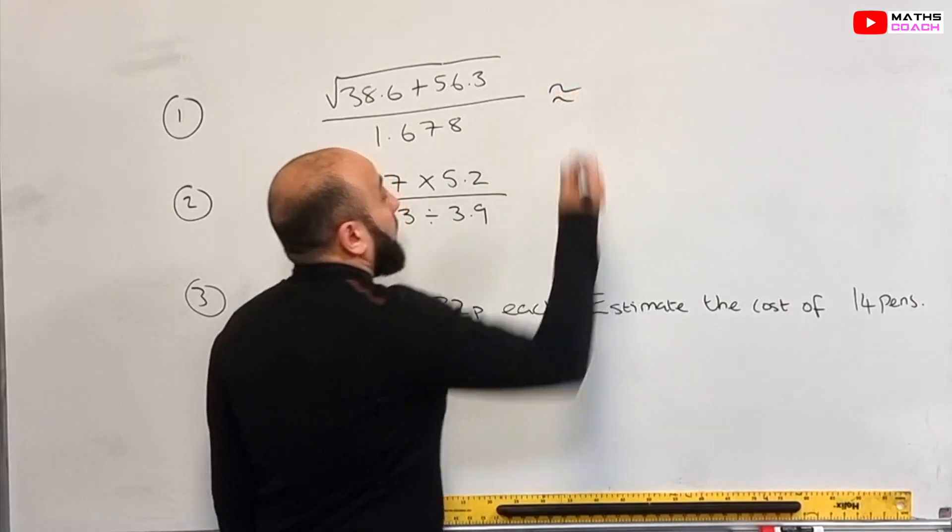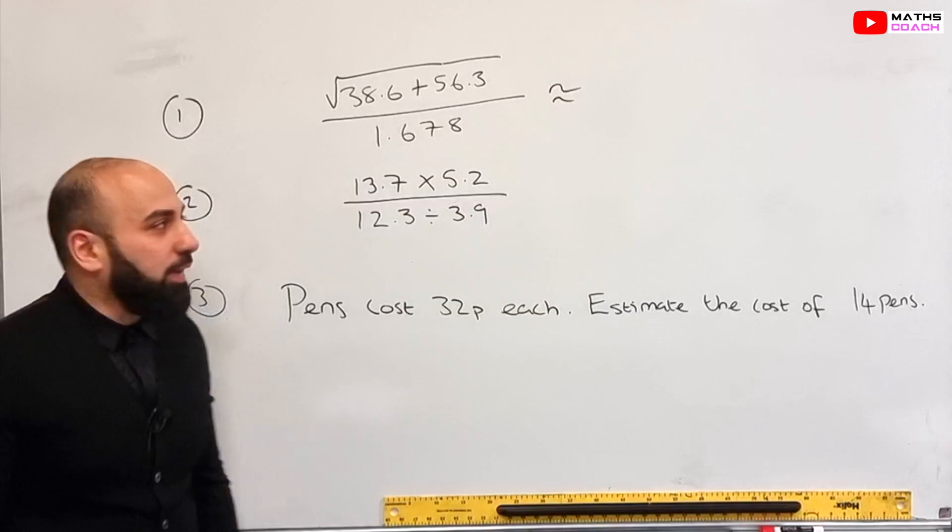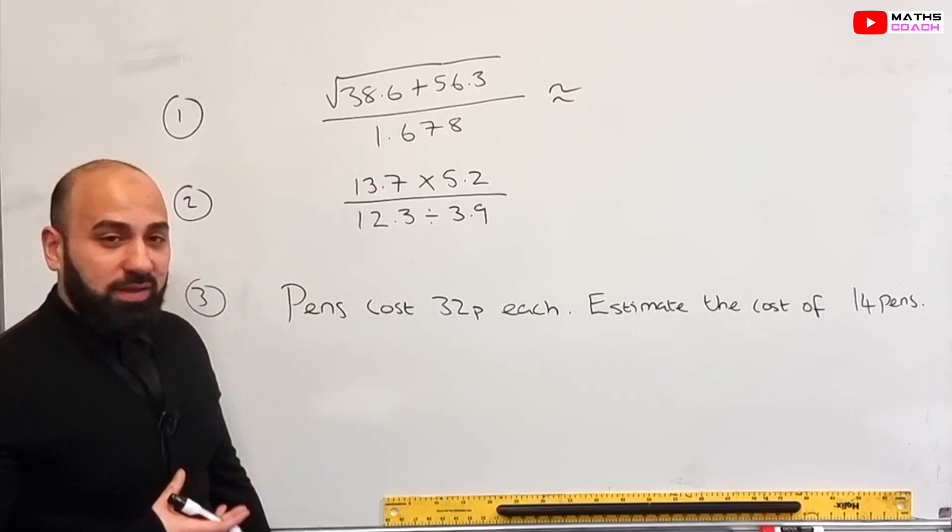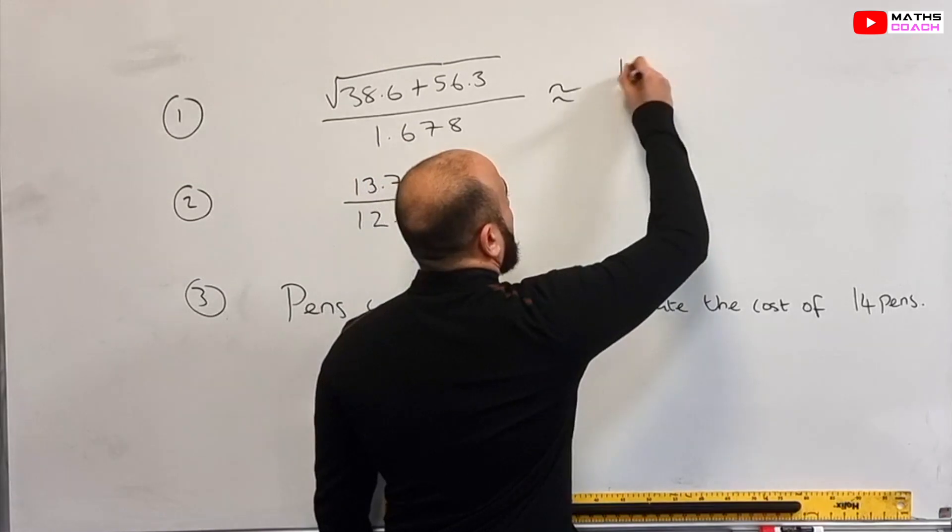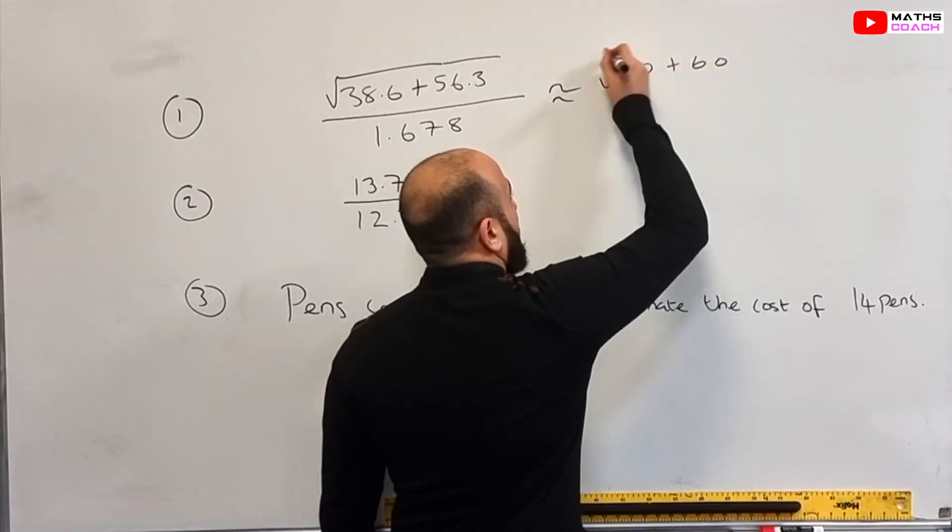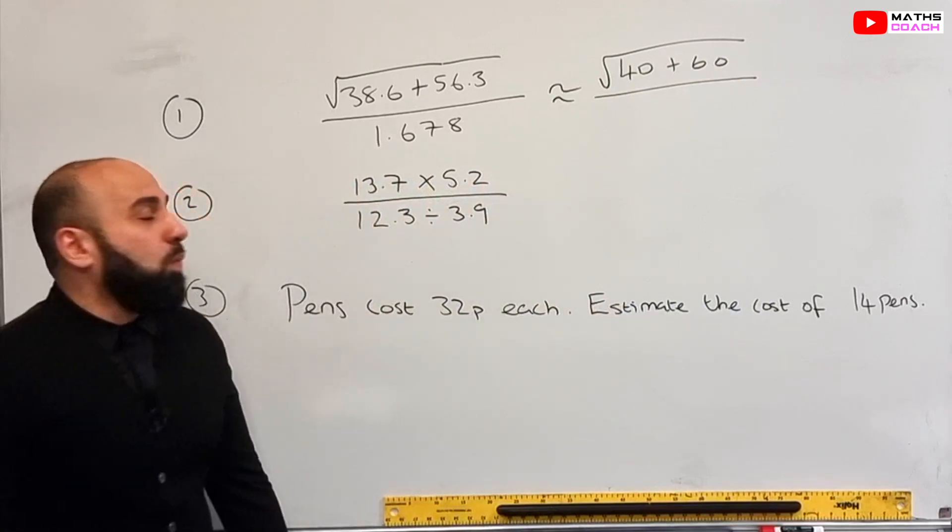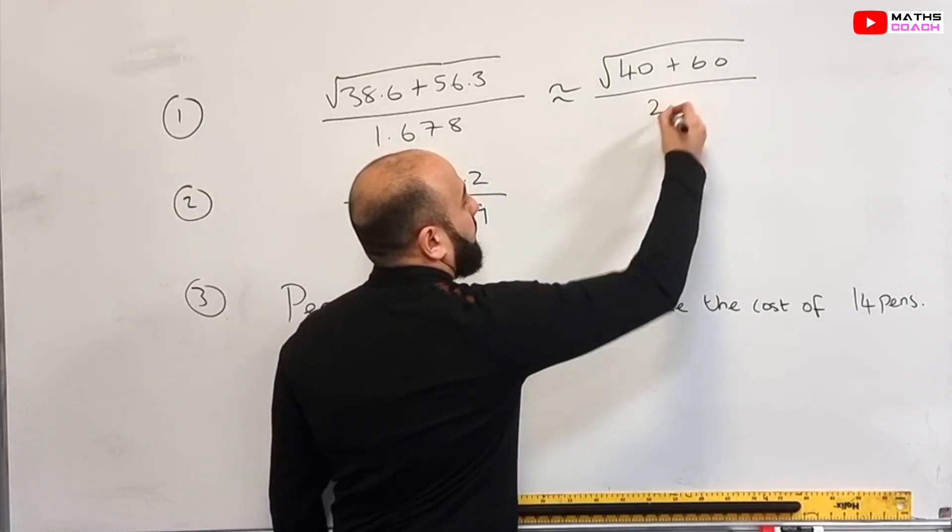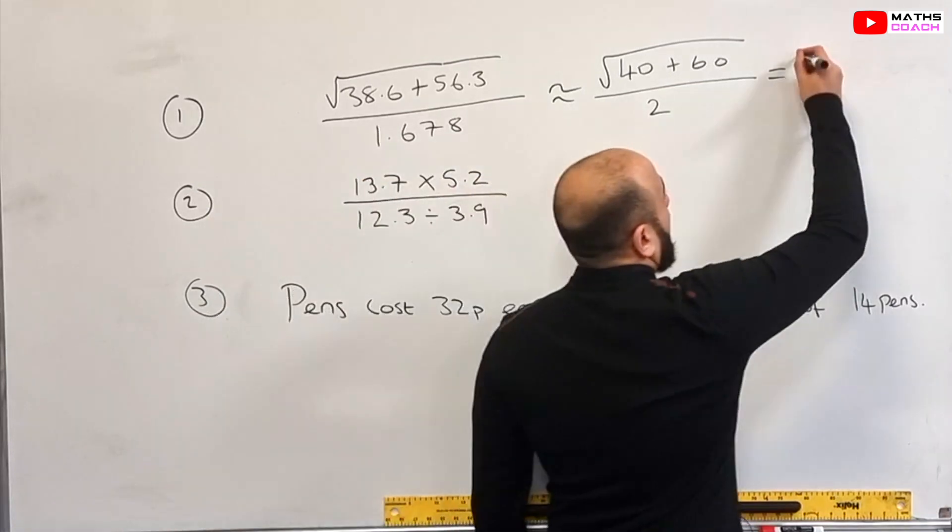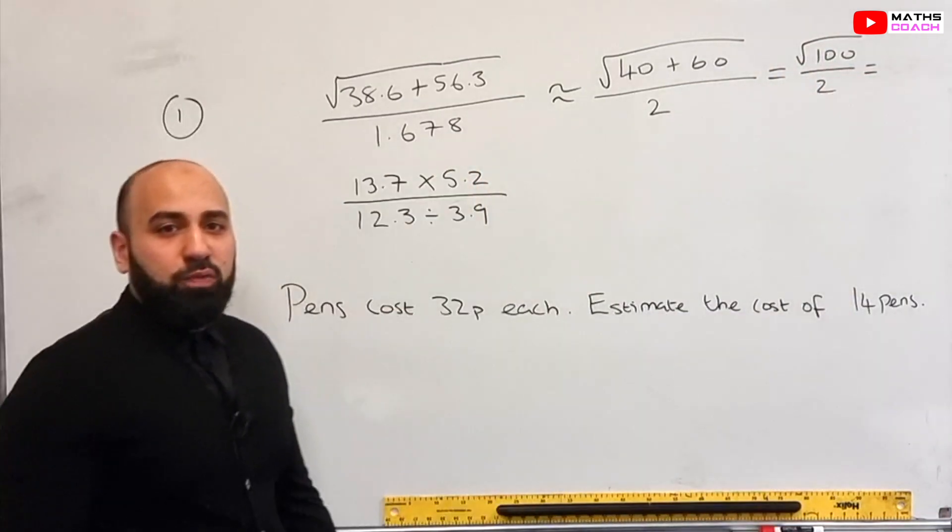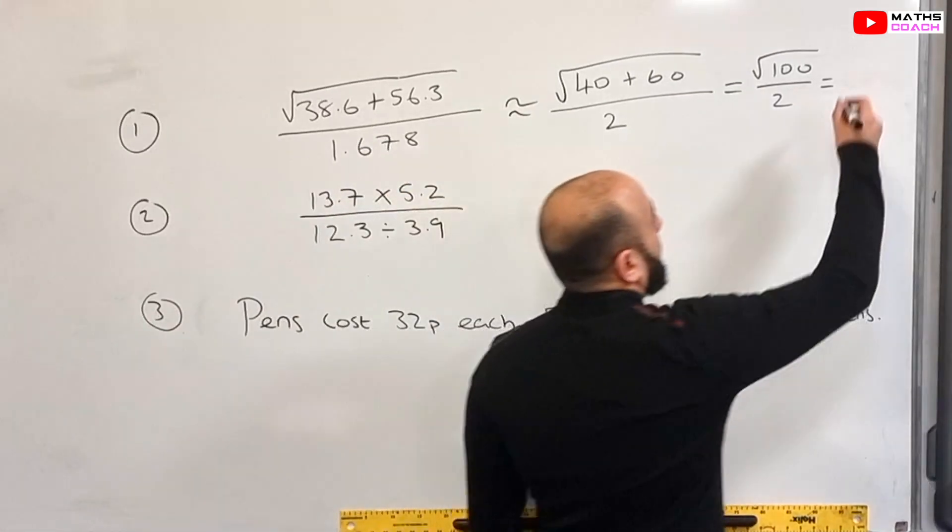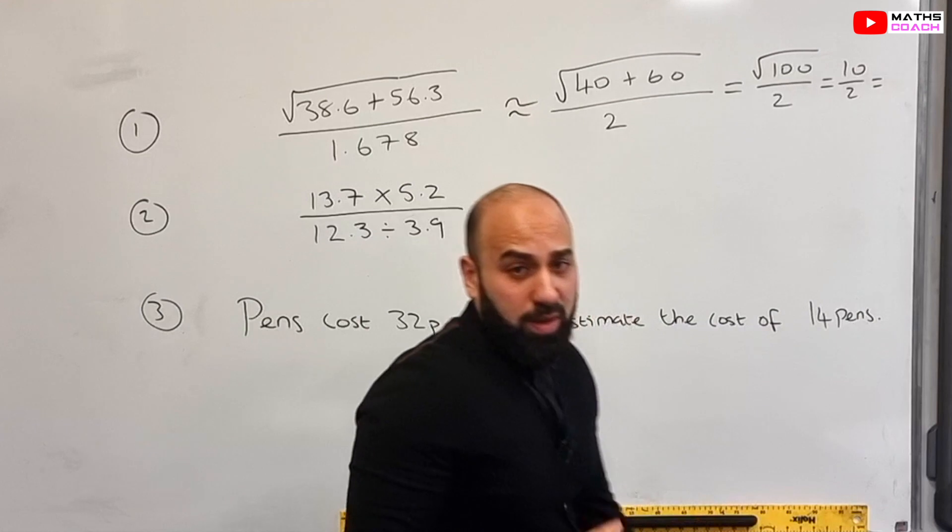Let's go through the first question now. So I'm going to round each of these numbers to one significant figure. This time I've added a square root into the question. So 38.6 to one SF is 40 plus 56.3 to one SF, which is 60. And we keep the square root divided by 1.678 to one SF, which is 2. Now we're going to add the 40 and the 60 together, which gives us 100. And the square root of 100, square root meaning a number times by itself, the same number gives you 100 and 5. And we know that's 10. And then 10 divided by 2 gives us 5.